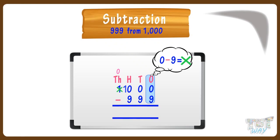Borrow 1 from 10 at hundreds place for tens place. Cross 10, make it 9, and give 1 to 0 at tens place — now we have 10 at tens place. Borrow 1 from it for ones place. Cross 10, make it 9, and give 1 to 0 at ones place — now we have 10 at ones place. We can subtract 9 from 10. 10 minus 9, we get 1. Write 1 in the answer at ones place.